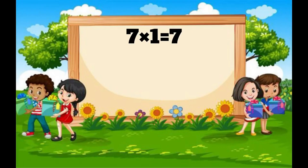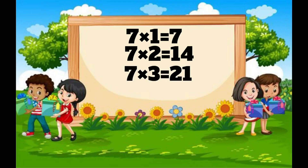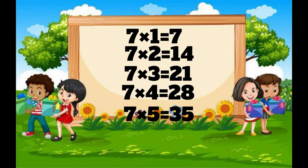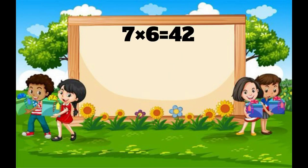Seven ones a seven. Seven twos a fourteen. Seven threes a twenty-one. Seven fours a twenty-eight. Seven fives a thirty-five. Seven six a forty-two.